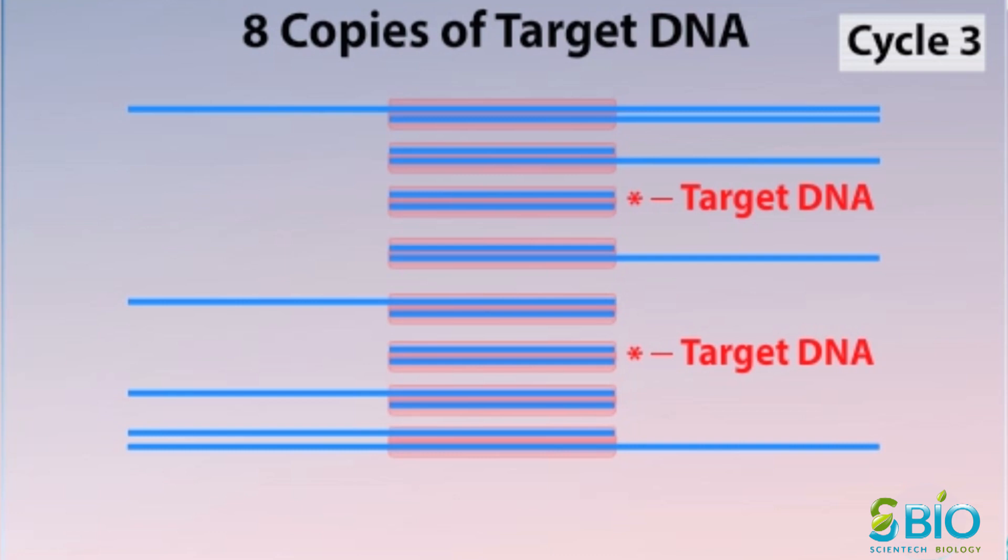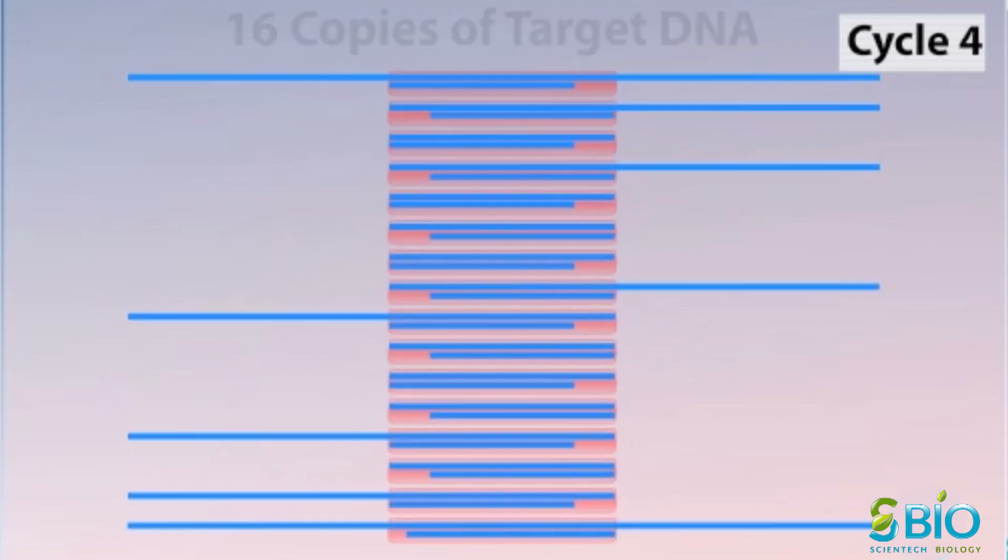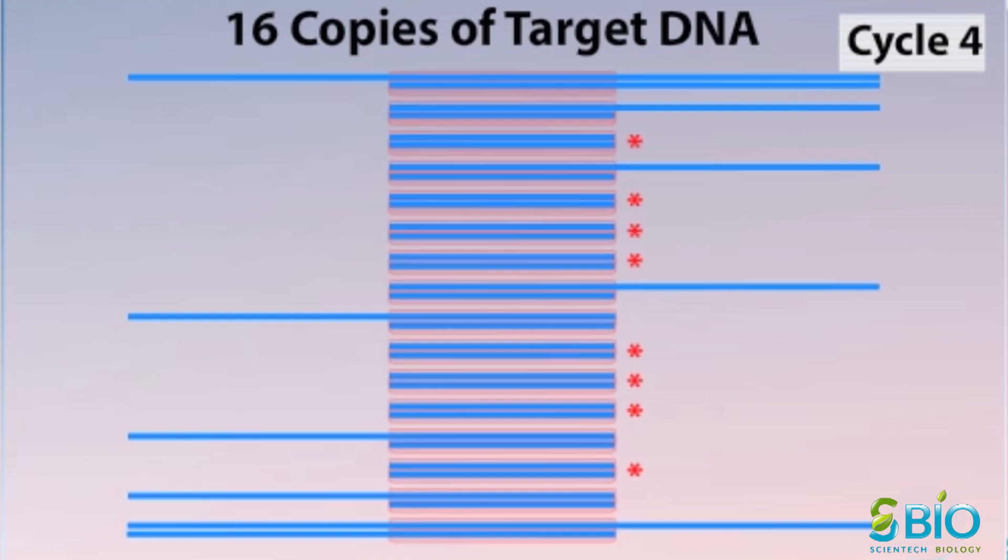Note that only two of the double-stranded copies consist of just the target fragment, while the others also include flanking DNA regions. As the number of cycles increases, the products consist of greater proportions of fragments with just the target DNA. After four cycles, half of the fragments consist of just target DNA and half also contain flanking DNA.